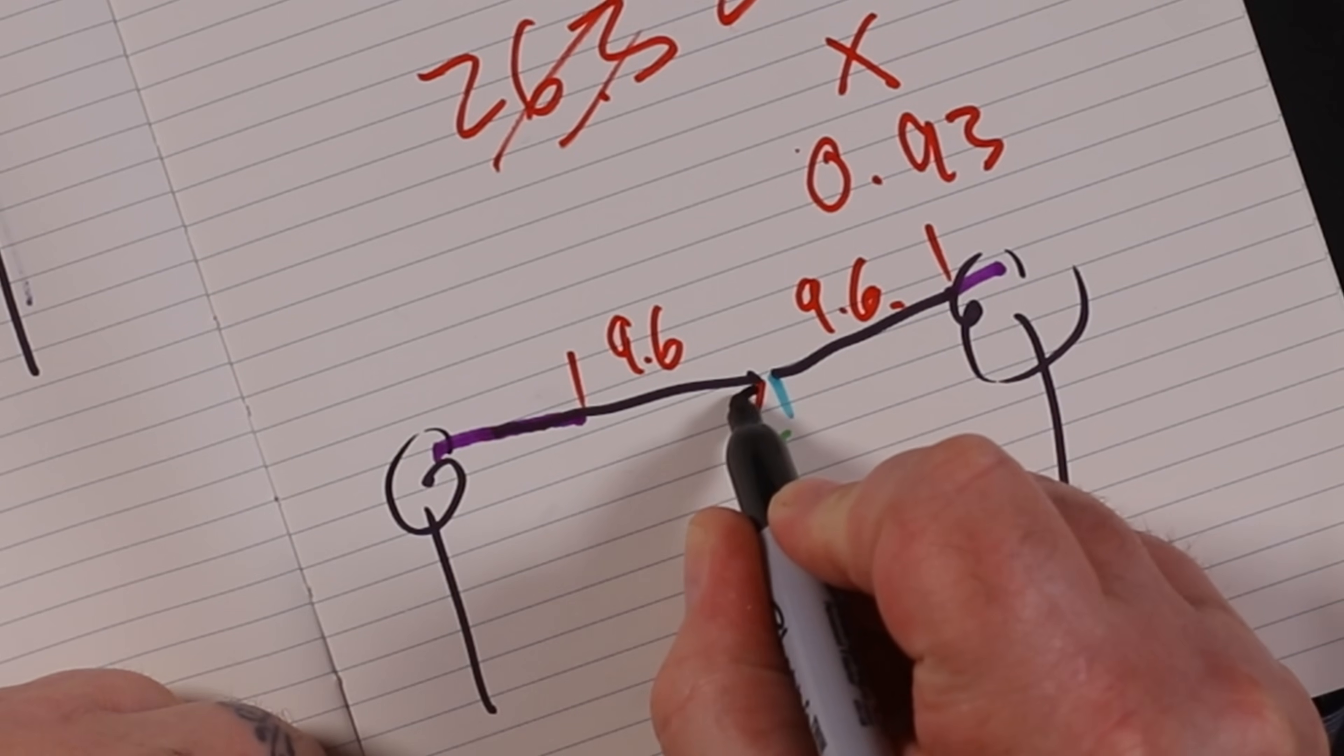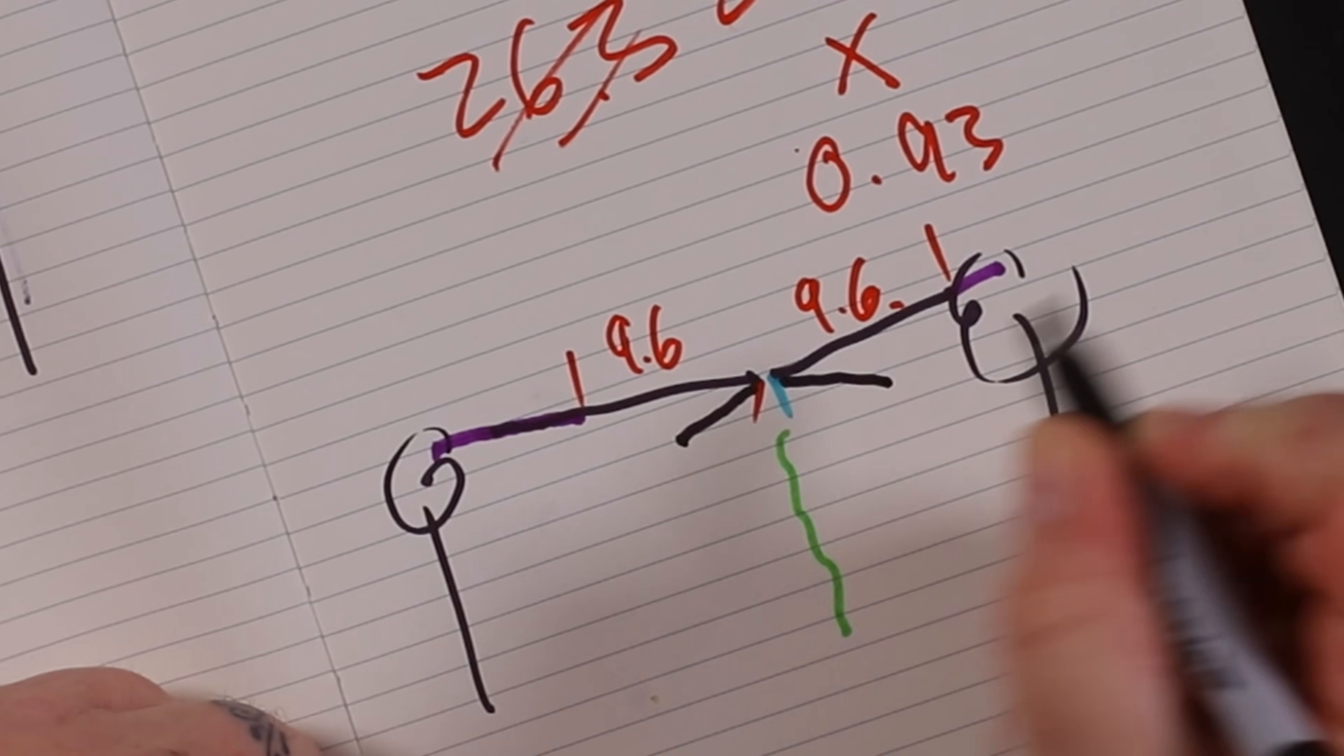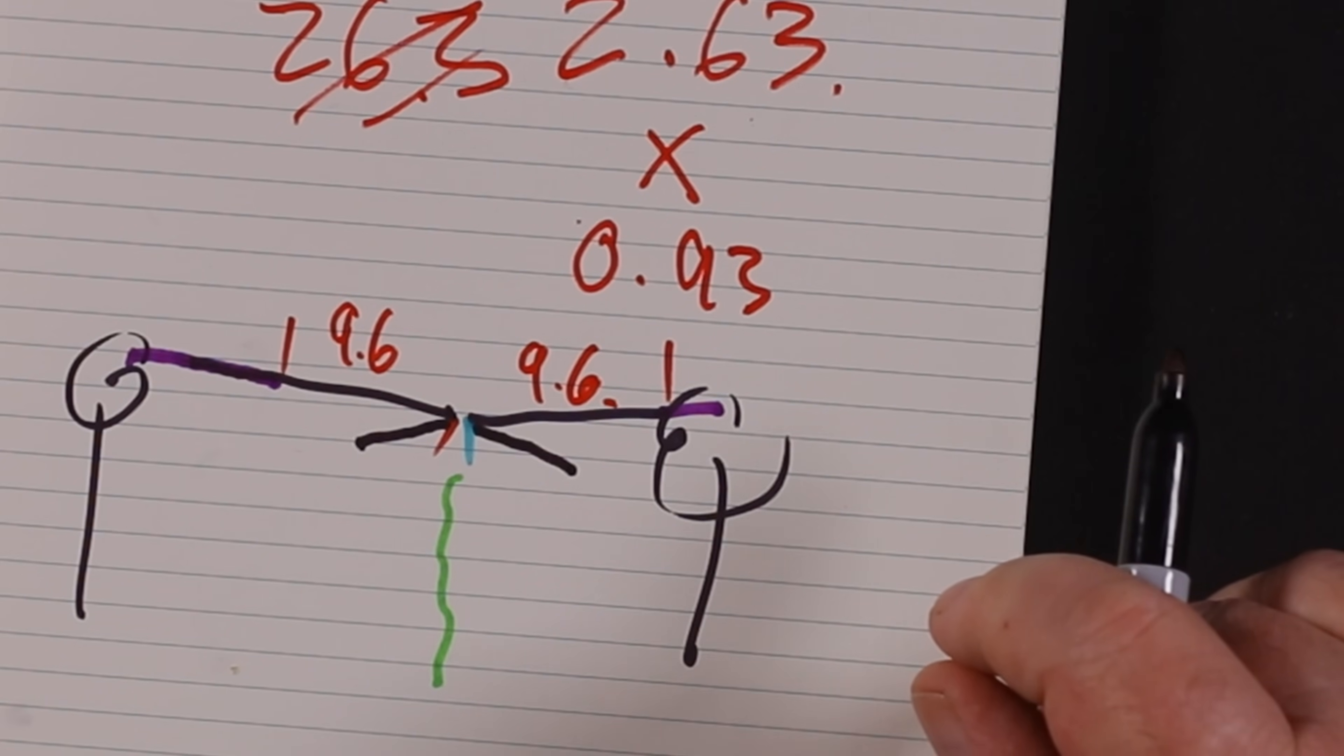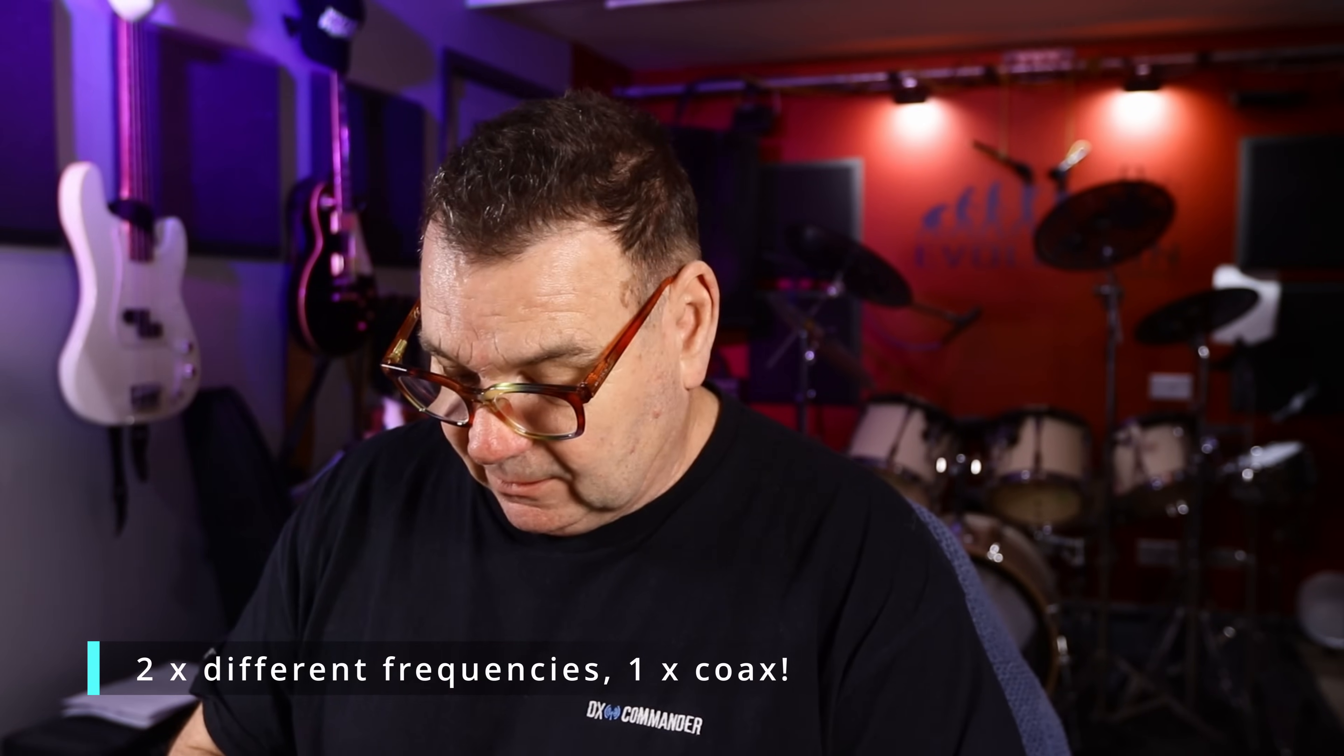These will be 9.6 each side. And interestingly enough, you could have a fan dipole - this isn't in the syllabus, this is for free. You can have a fan dipole because you can have another one underneath it at the same connection point - that's a fan dipole.